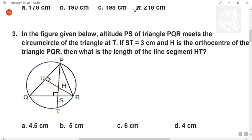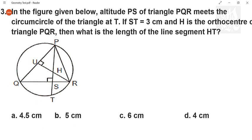Let's have a look at the question. In the given figure, altitude PS of the triangle PQR meets circumcircle of triangle at T. HT is 3. H is the orthocenter. What is the length of line segment HT? Now have a look. Can I say one thing? PQR is equal to PTR. Angles in the same arc.